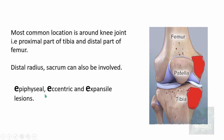Note that these tumors are epiphyseal — you can easily make out that these are epiphyseal and they are eccentric in location, and they are usually expansile lesions. So the three key features are: epiphyseal, eccentric, and expansile lesions.